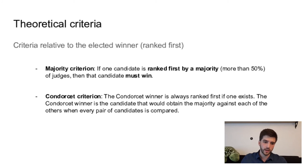The Condorcet criterion, which is stronger than the majority criterion, says that the Condorcet winner should always be elected, so should always be ranked first if one exists. So what is the Condorcet winner? The Condorcet winner is the candidate that would win against any other candidates in pairwise matches, win in the sense that it would obtain a majority, so it would be better more frequently. So typically Copeland's method satisfies the Condorcet criterion.